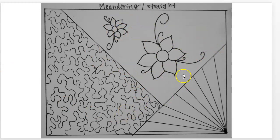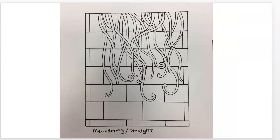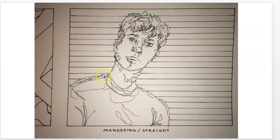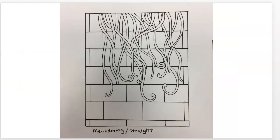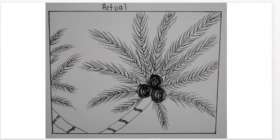Meandering and straight: one example shows meandering and straight but the flowers aren't really meandering or straight — they don't make sense for the concept, and the composition is broken up and not very cohesive. A more abstract version feels rushed and boring. Getting better: bricks with hair-like things coming off them is more interesting. The best example has a meandering portrait and strong straight lines — excellent work showing the clear difference between the two.